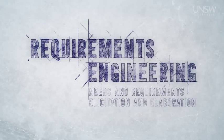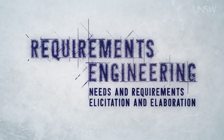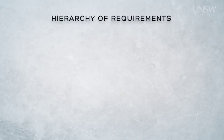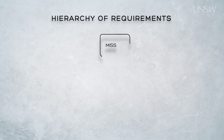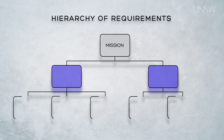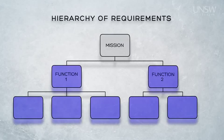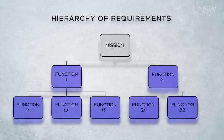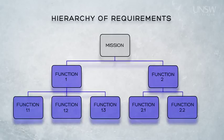Now that we have an understanding of needs and requirements, and of the process of requirements engineering, let's look more closely at the process of developing a good set of requirements. We saw earlier that needs and requirements can be captured in logical or functional hierarchies. At the end of this module, we'll look briefly at a tool called the Requirements Breakdown Structure, or RBS, that will assist in developing these hierarchies.